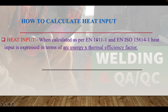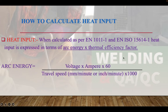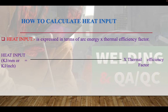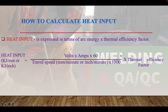When calculating heat input as per EN 1011-1 and EN ISO 15614-1, heat input is expressed in terms of arc energy multiplied by a thermal efficiency factor. The arc energy formula is the same: Voltage × Ampere × 60 ÷ Travel Speed (mm/min) ÷ 1000. The heat input is then obtained by multiplying arc energy by the thermal efficiency factor, which we will discuss in the next slide.